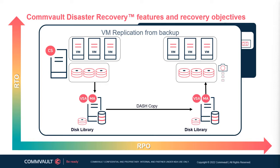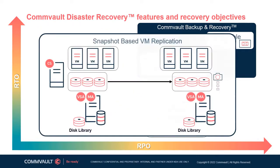VM replication using backup data is supported by several source and destination hypervisors and is targeted where the RPO is greater than four hours. The second VM replication mode uses IntelliSnap, which mounts either a hardware-based storage snapshot from a supported hardware vendor storage array or a VM software snapshot, and then reads data from the mount directly to the destination VM. Using snapshots eliminates the need to create a backup copy for replication, which provides faster replication and minimizes the impact on the production environment.